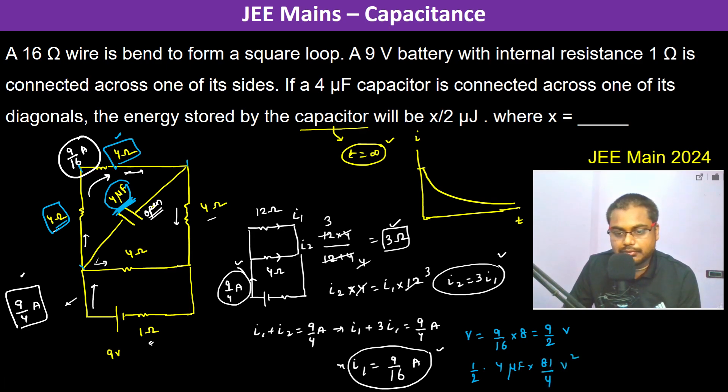This is microjoule. So therefore we can see here x is going to be 81.